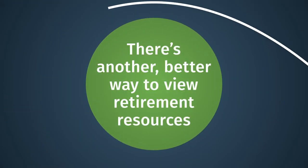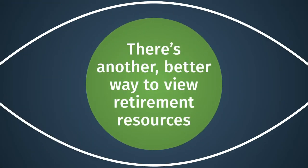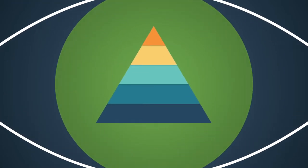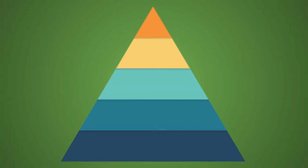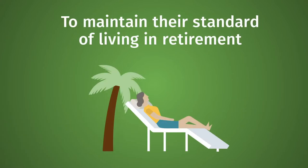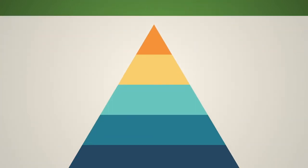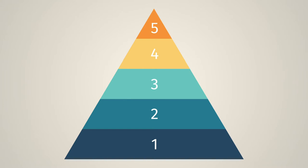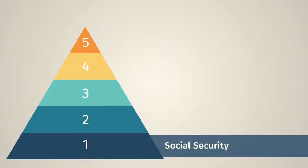That's as a pyramid, because households don't need to rely on each resource equally to maintain their standard of living in retirement. The retirement pyramid consists of five basic components: Social Security, home ownership,